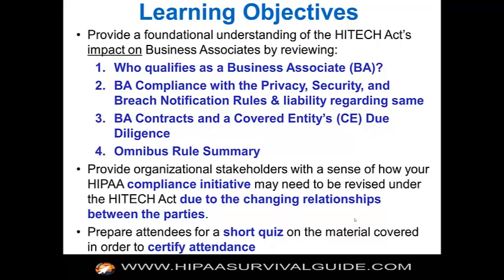Our learning objectives for today's training are as follows: we want to provide a foundational understanding of the HITECH Act's impact on business associates by reviewing, one, who qualifies as a business associate; two, business associate compliance with the privacy, security, and breach notification rules and liability regarding same, including the omnibus rule because it really impacted these other rules; three, we'll discuss BA contracts and the covered entity's required due diligence, and also now a business associate's required due diligence with respect to subcontractors.